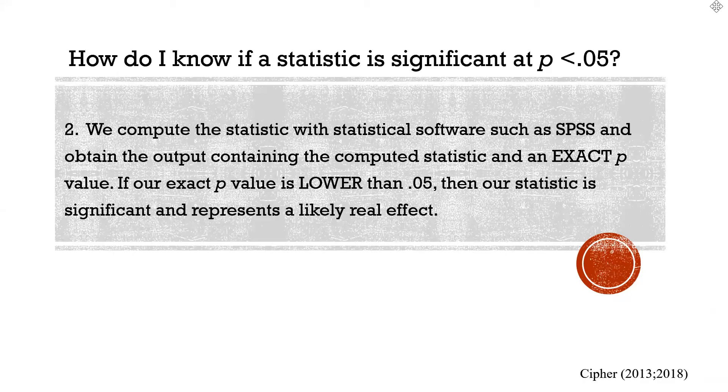So, the other way we know if a statistic is significant, if p is less than 0.05, is by using statistical software such as SPSS or SAS or JUMP or STATA. Any statistical software output will give us an exact p-value.